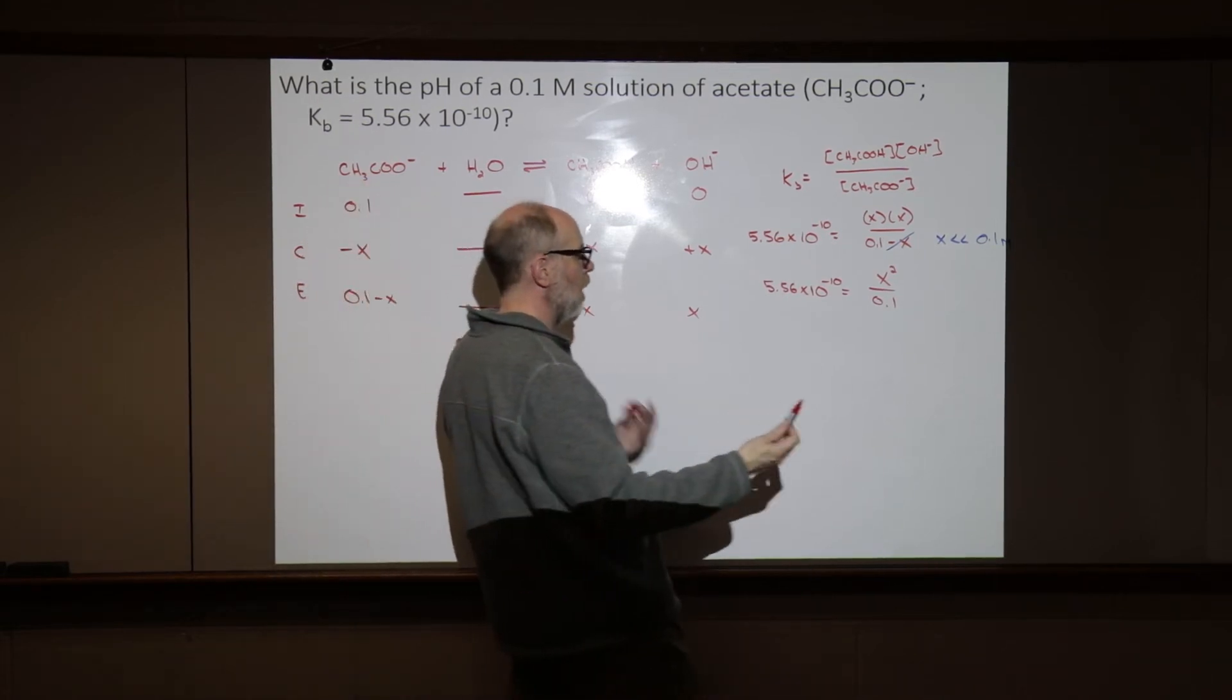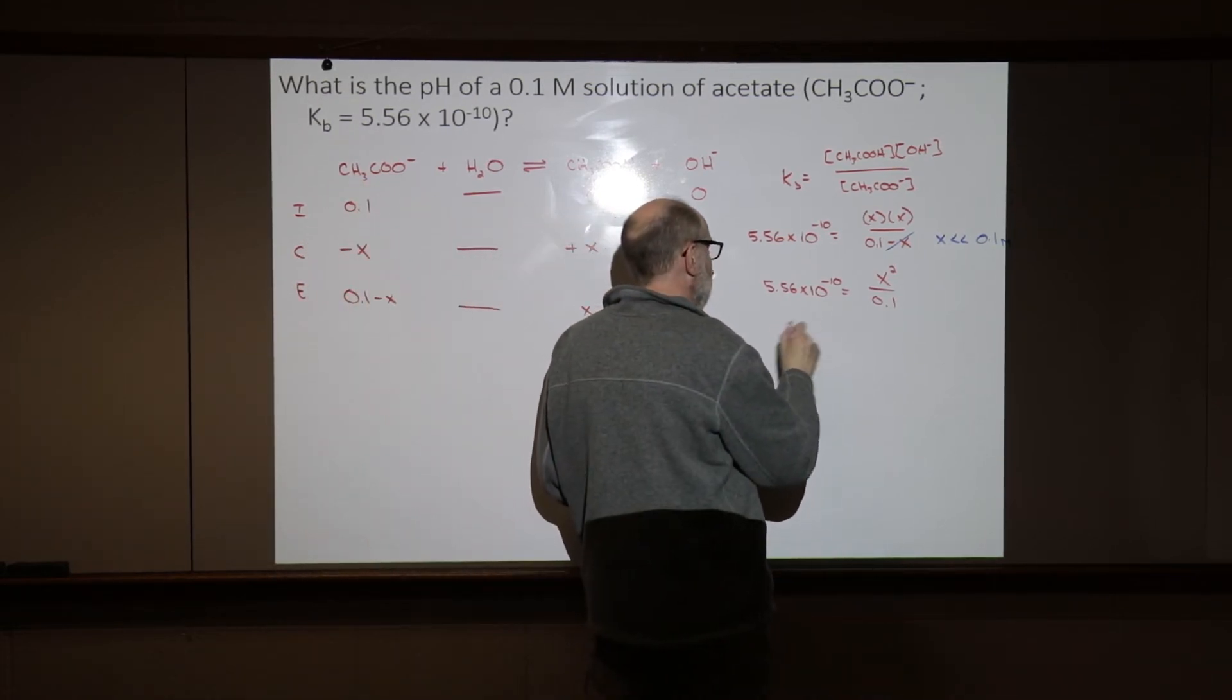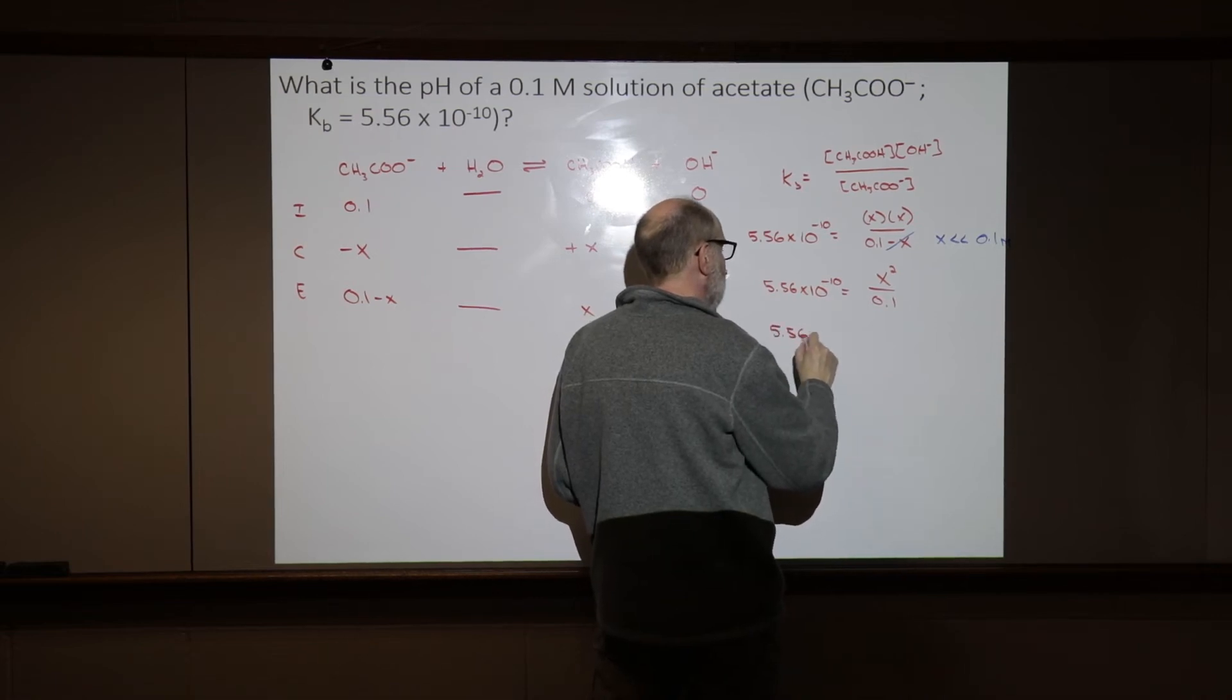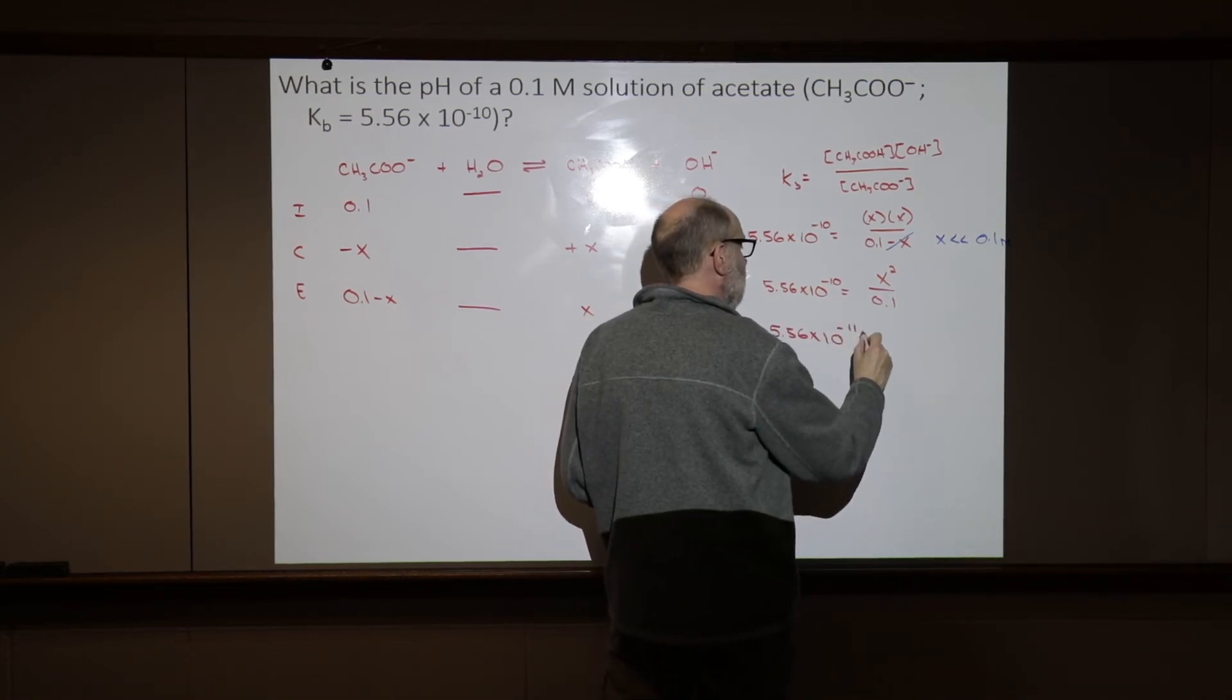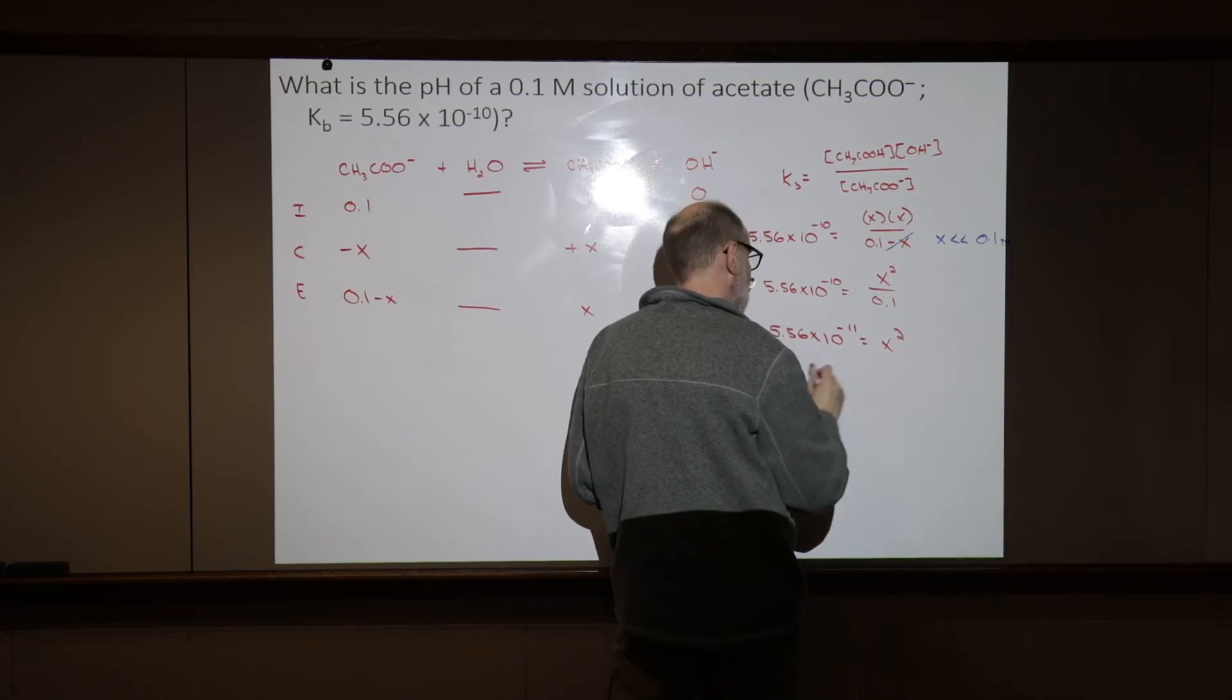That is so much nicer. So we get the x is going to be 5.56 times 10 to the minus eleventh equals x squared. And x,